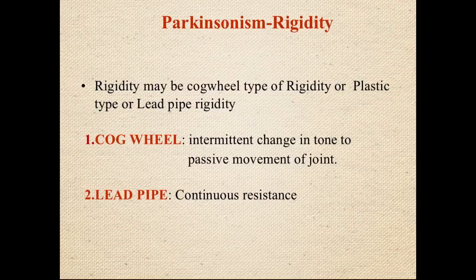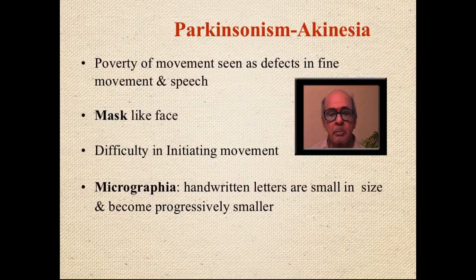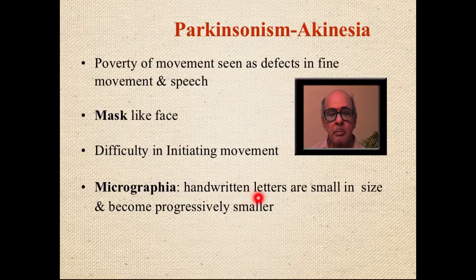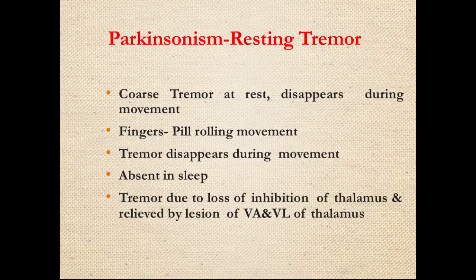The key features of parkinsonism are: festinating/shuffling gait, cogwheel or lead pipe rigidity, akinesia with mask-like face and absence of arm swing, micrographia (progressively smaller handwriting), and poverty of movement in speech. The resting pill-rolling tremor is coarse, disappears during movement and during sleep, and results from loss of thalamic inhibition.